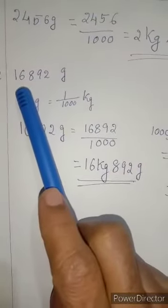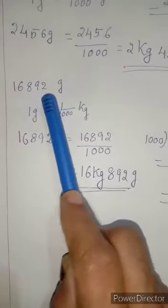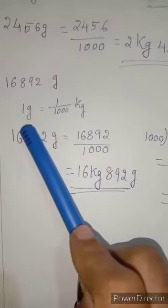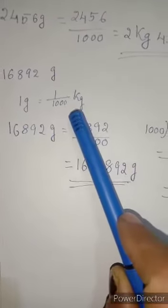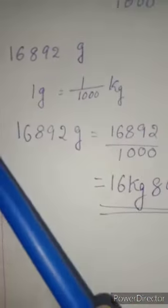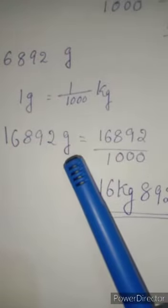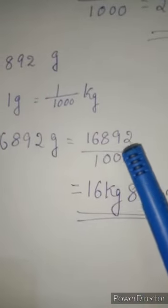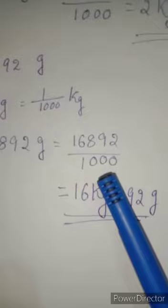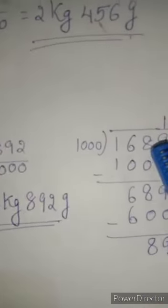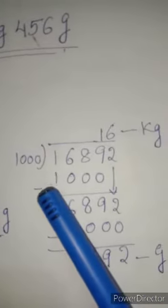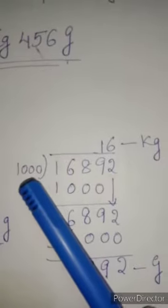Second example, 16892 gram. First we will write 1 gram is equal to 1 by 1000 kg. So 16892 gram is equal to 16892 divided by 1000. This you can do by long division method.